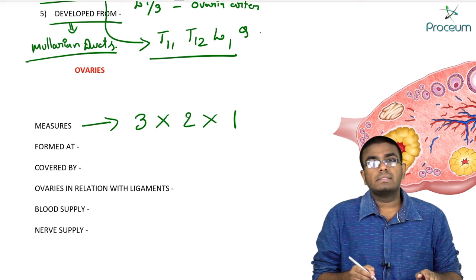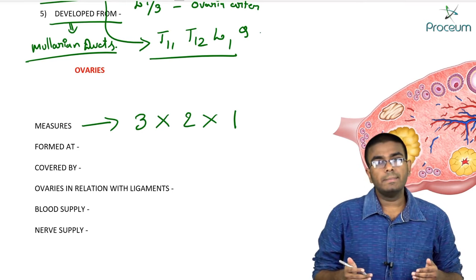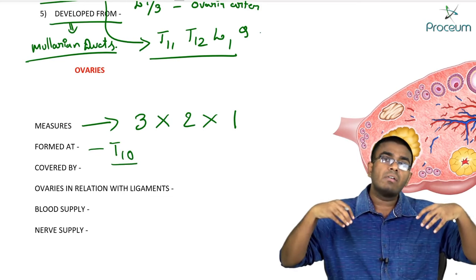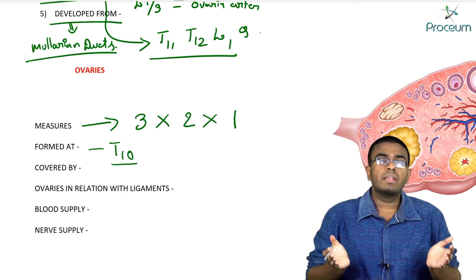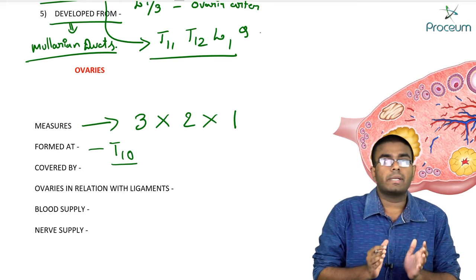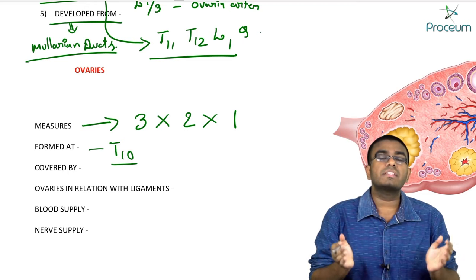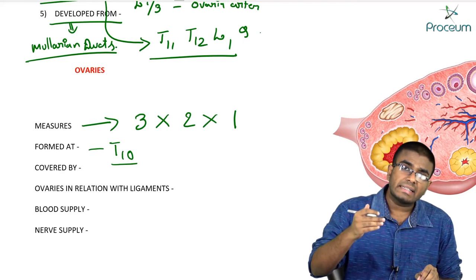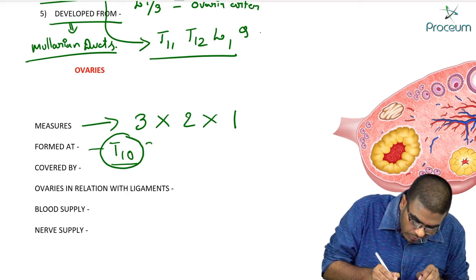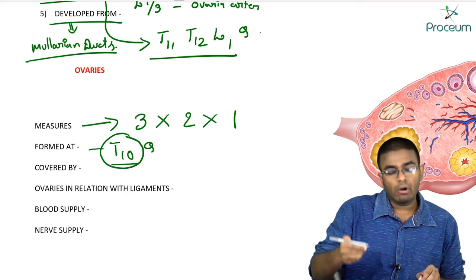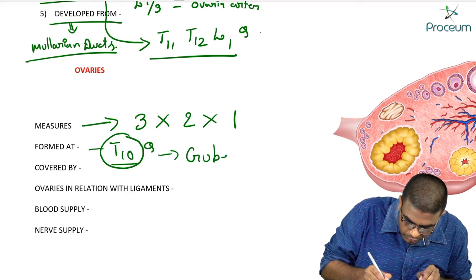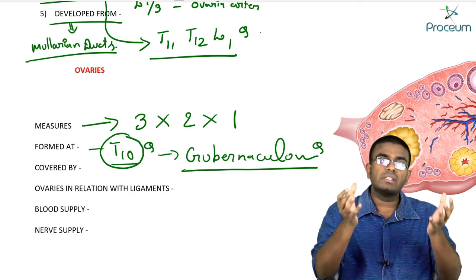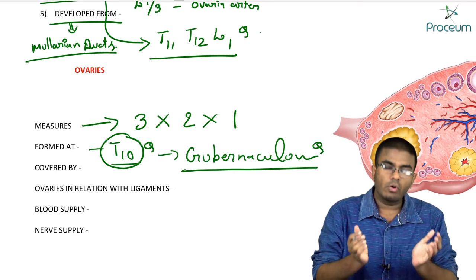These ovaries are formed intra-abdominally at the T10 segment, and they descend down to be placed in the ovarian fossa. The ovaries descend with the help of the gubernaculum — with the help of this structure, the ovaries descend from T10 to the ovarian fossa.